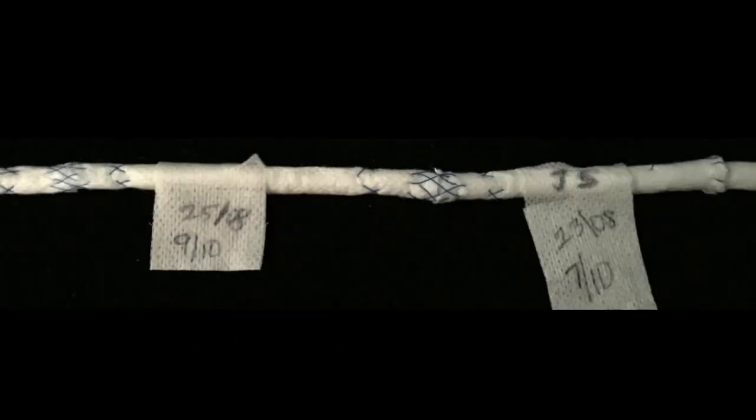Then you can test your tendon repair for gapping and failure by trying to pull it apart. If you put a label adjacent to each repair you do with the date you've done them, you can have them assessed by your trainers at their convenience. You can monitor your progress and see if you're improving.